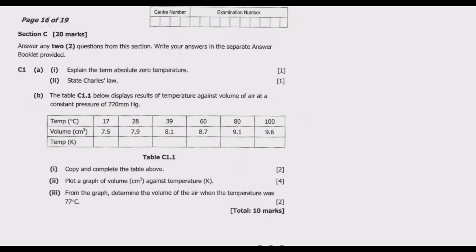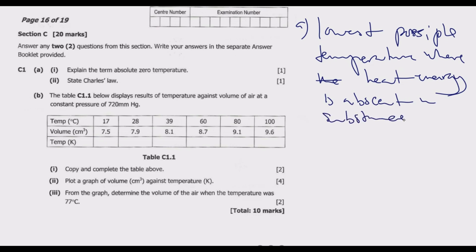Let us look at question C1. So L1, explain the term absolute zero temperature. When you're talking about absolute zero temperature, we are referring to the lowest possible temperature where heat energy is absent in a substance. That's the absolute zero temperature.